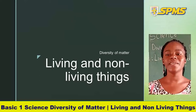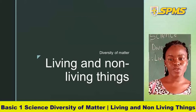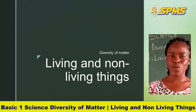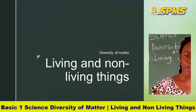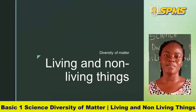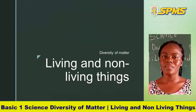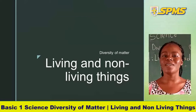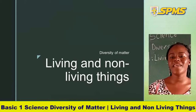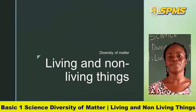Living things can feel. Living things also grow — they mature and go through different stages of life. So we have a puppy that will grow up to be a dog, and babies will grow up to be adults. A baby plant will grow up to be a parent plant. And lastly, living things reproduce their young ones.